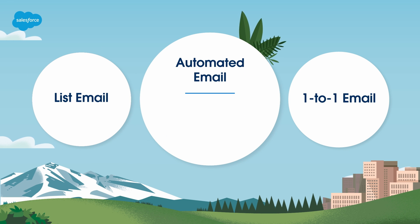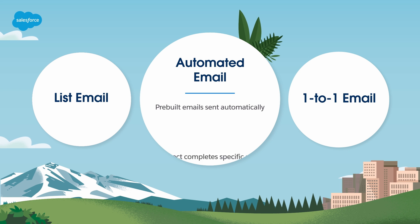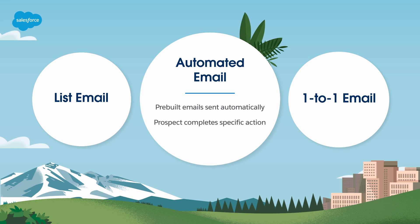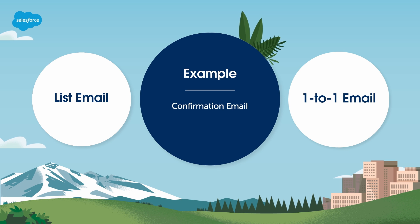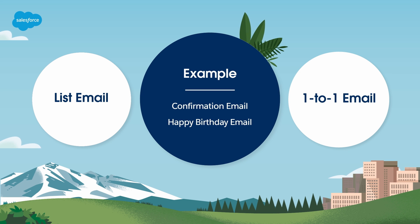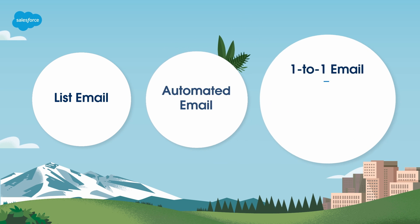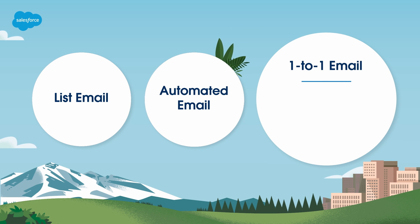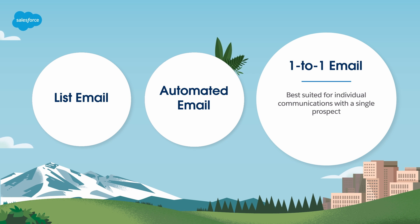Our next option is an automated email. These are pre-built emails that are sent automatically when a prospect completes a specific action or meets set criteria. For example, a confirmation email when a prospect signs up for an event via a form, or a happy birthday email personalized for each prospect. Our final option is a one-to-one email. This email type is best suited for individual communications with a single prospect and can be sent from the prospect, lead, or contact record.